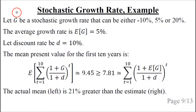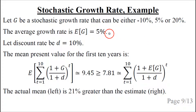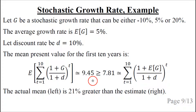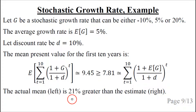Now let G be a stochastic growth rate that can be either minus 10%, 5%, or 20%. The average growth rate is 5%, and the discount rate is a constant 10%. Using a computer spreadsheet to calculate the mean present value, the actual mean present value is about 9.45, and the estimated mean present value is about 7.81. So the actual mean is about 21% greater than the estimate — that's a big difference.